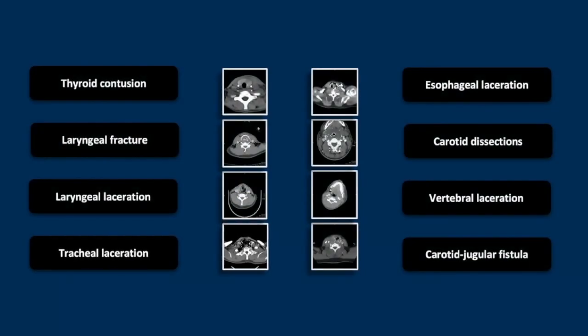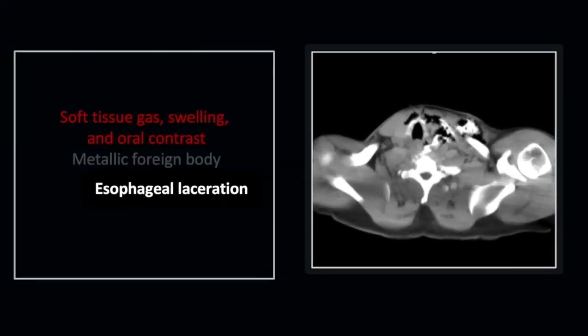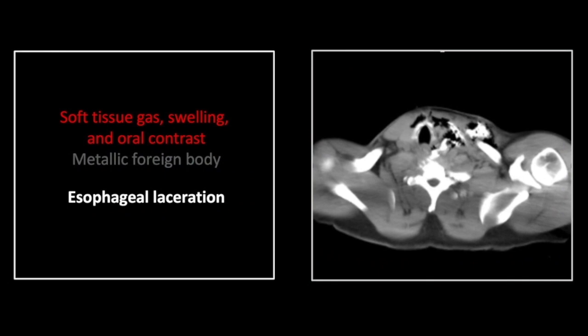Our next case is an esophageal laceration. There is extensive soft tissue gas. Whenever an injury of this type is suspected, a sip of oral contrast is in order, and that's what they did in this particular case. You can see the oral contrast spilling out into the supraclavicular and anterior cervical soft tissues.